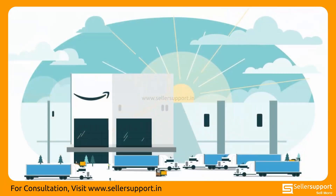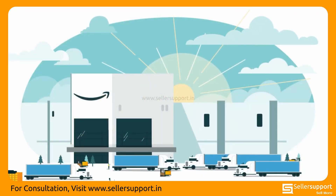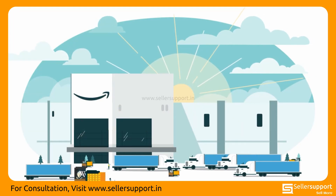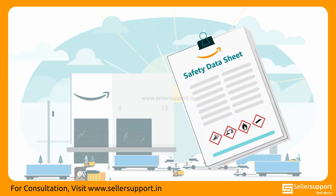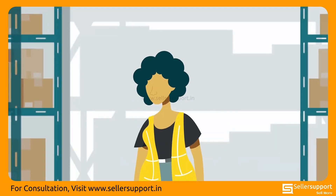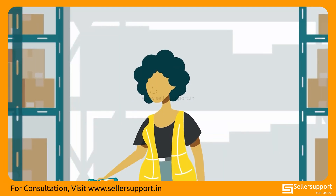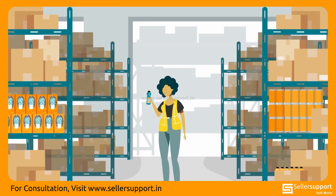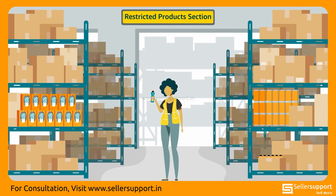Let us look at an example of how an Amazon fulfillment center uses a safety data sheet. Meet Sam. Today Sam is storing a bottle of tile cleaner in the restricted products section of the fulfillment center.